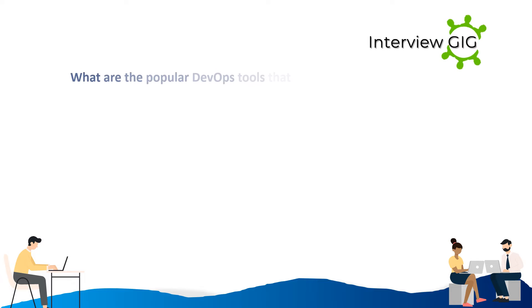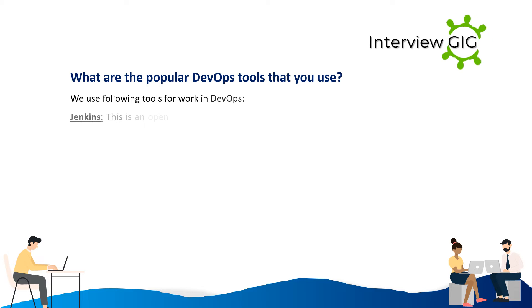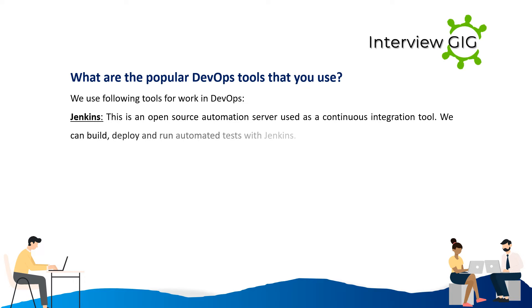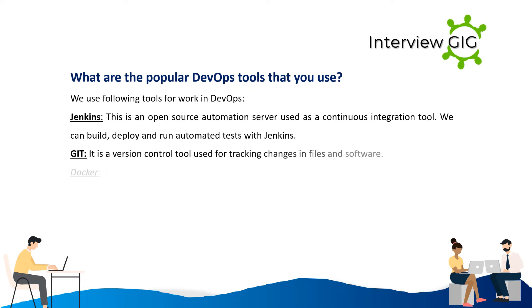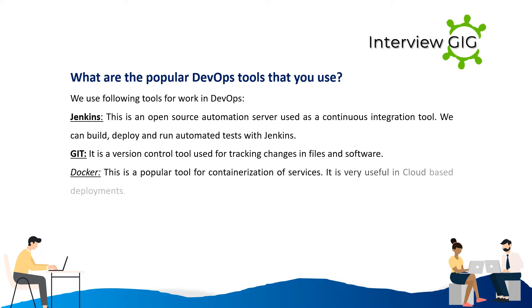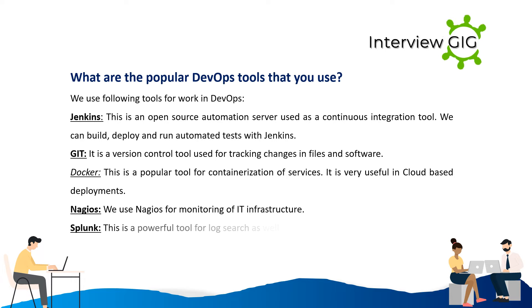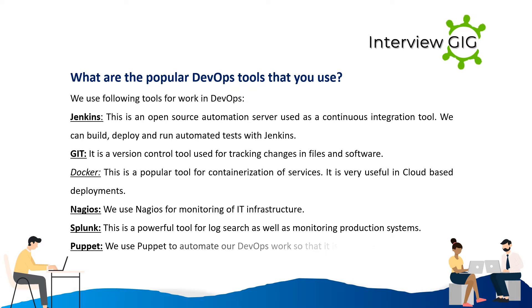Popular DevOps tools we use include: Jenkins, an open-source automation server used as a continuous integration tool for building, deploying, and running automated tests. Git, a version control tool for tracking changes in files and software. Docker, a popular tool for containerization of services, very useful in cloud-based deployments. Nagios, used for monitoring IT infrastructure. Splunk, a powerful tool for log search and monitoring production systems. Puppet, used to automate DevOps work so it is reusable.